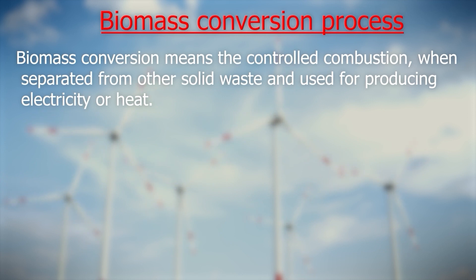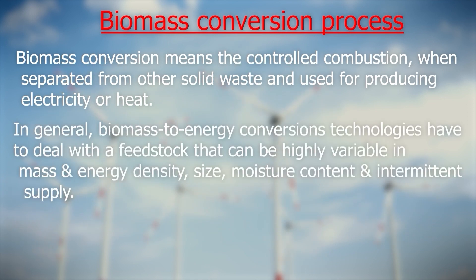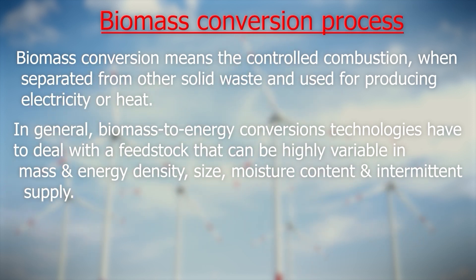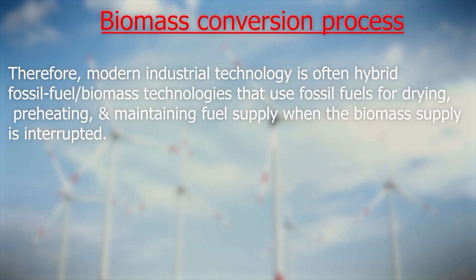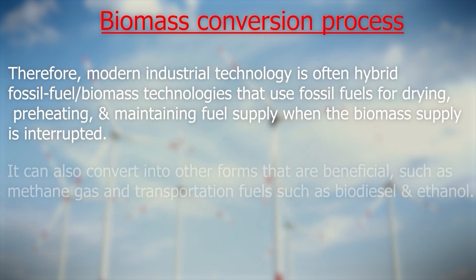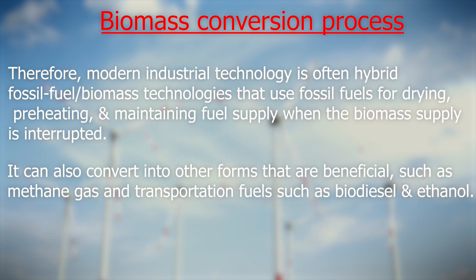Now we are moving on to the biomass conversion process, involving controlled combustion when separated from other solid waste and used for producing electricity or heat. Biomass-to-energy conversion technologies have to deal with feedstock that can be highly variable in mass and energy density, size, moisture content and intermittent supply. Modern industrial technology is often a hybrid of fossil fuel and biomass technologies that use fossil fuel for drying, preheating and maintaining fuel supply when the biomass supply is interrupted. Biomass can also be converted into other beneficial forms such as methane gas and transportation fuels like biodiesel and ethanol. Methane gas is an important component of biogas, obtained from agricultural waste, garbage and other organic waste decomposed in specially designed digesters, or from landfills.